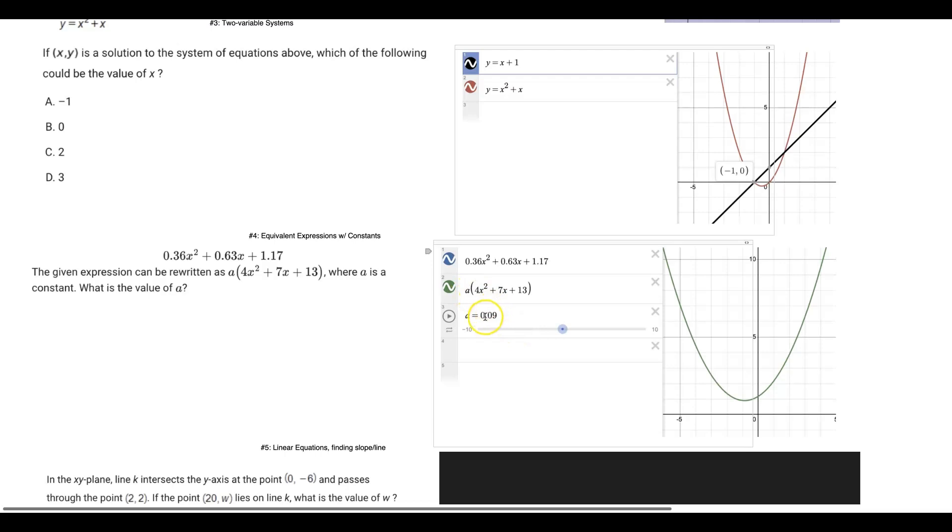What I did is I just set up a slider for a and I dragged it until the two lines matched up because we want an equivalent expression. These two can be rewritten as that one. A value of a would make these two equations equivalent or otherwise the same line. A value of 0.09 for a gave me the same line. So I knew that was the answer.